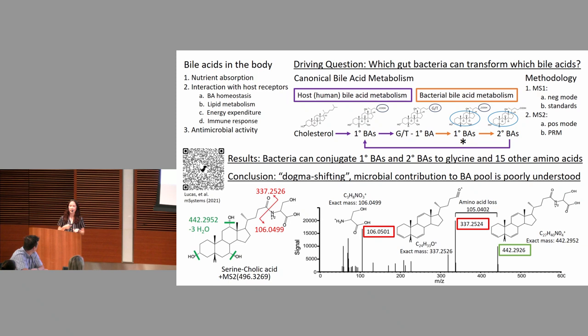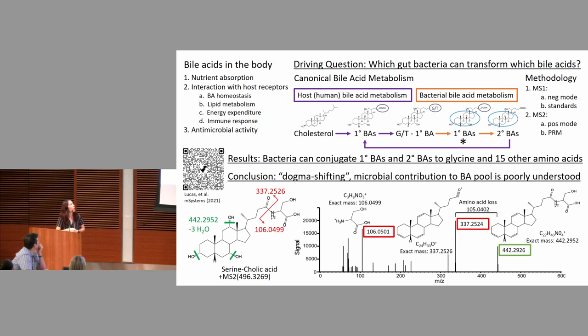Because we know the precursor ion, we can confirm the entire molecule is built from these pieces. Our major finding was that bacteria can conjugate both primary and secondary bile acids to glycine as well as 15 other amino acids. This is super important because glycine was thought to only be a host-derived conjugate, so we don't actually fully understand the microbial contribution to the bile acid pool in the body. This is dogma-shifting research.